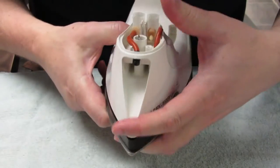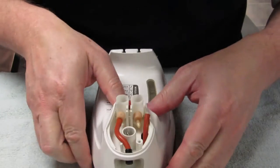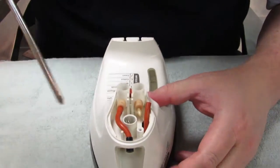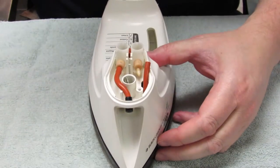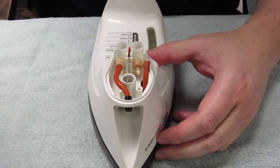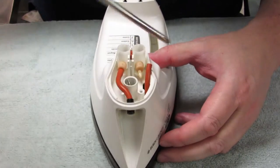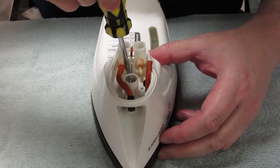Make sure this line is parallel as well as this one - that means it's in both sides. Now we're just going to screw this down with the smaller Phillips screwdriver.